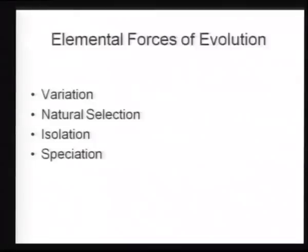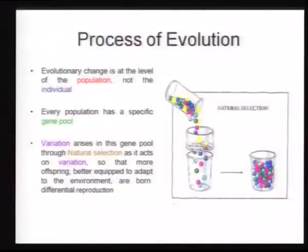Evolution takes place through the interaction of certain forces that act in nature. One of them is variation. The second is the mechanism given by Charles Darwin — natural selection. The third elemental force required for evolution is isolation. Then new species are formed, and the formation of new species in simple words means evolution. Evolution actually takes place in a population; in other words, it is the population which evolves.